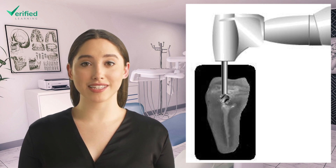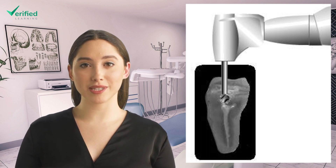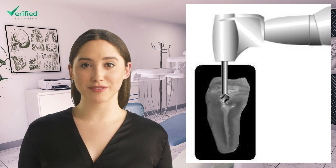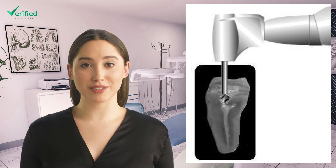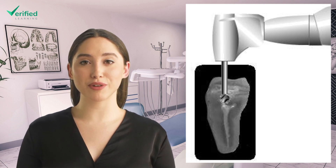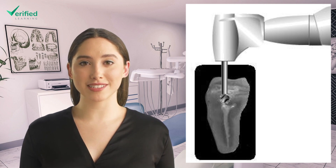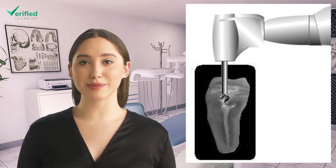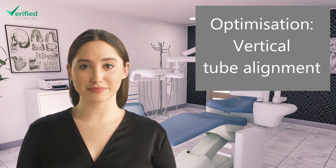In endodontics, part of access cavity planning involves measuring how deep the pulp chamber is from the occlusal surface or incisal edge — if you have drilled deeper than this and not found the pulp, you know you are off course. If you are using a periapical for a posterior tooth and the cusps are not superimposed, it is hard to tell which cusp to use on the film for depth judgment. With a previous bite wing that should have properly superimposed cusps, you get a much more accurate idea of the position of the pulp chamber in relation to the occlusal surface.